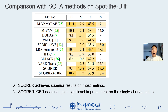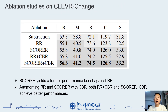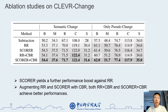However, SCORE plus CBR doesn't gain significant improvement on the single-change setup. Further, we conduct ablation studies on the CLEVR-Change dataset to figure out the contribution of each module. We find that SCORE achieves a further performance boost against the baseline. Augmenting the baseline and SCORE with CBR, both methods achieve better performance. Under the settings of semantic change and pseudo-change only, we can observe several consistent observations.